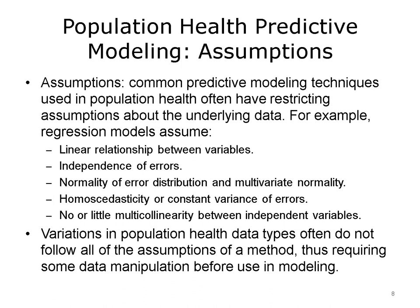The common predictive modeling techniques used in population health often have restricting assumptions about the underlying data. For example, regression models assume there is a linear relationship between variables, independence of errors, normality of the error distribution and multivariate normality — basically that whatever could not be predicted is not following a special pattern — homoscedasticity of errors with constant variance, and no or little multicollinearity or correlation between independent variables. Note that the typical variations in population health data often do not follow all of the assumptions of a given statistical method, and thus population health data must often go through some sort of manipulation before it is used in the modeling process.